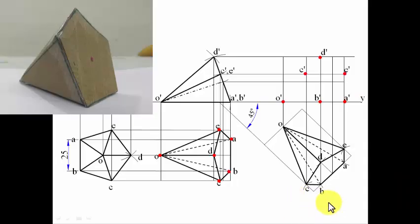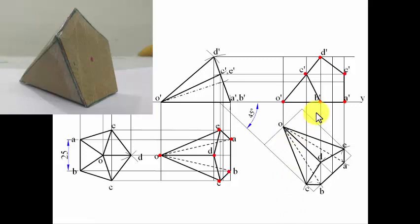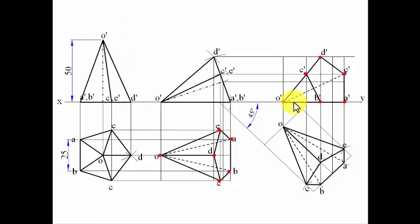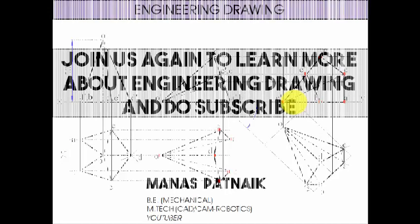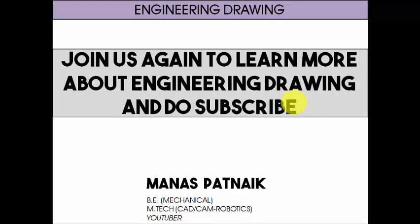Looking from the front, the squeezed pentagon base is visible, and edges C-O and B-O are visible and darkened with solid lines. Edges not visible are drawn as broken hidden lines. This completes the projection of a pentagonal pyramid with one triangular face in the HP and the axis top view at 45 degrees with the VP. If you have any doubts, write them in the comments below. This is Manas Patnak signing off — keep drawing!